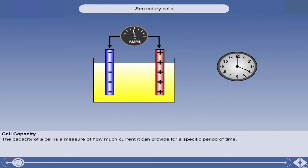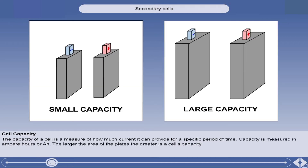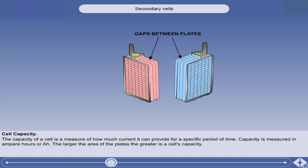The capacity of a cell is a measure of how much current it can provide for a specific period of time. Capacity is measured in ampere hours, or AH, and is determined by the surface area of the electrodes, or plates as they are often called. The larger the area of the plates, the greater is a cell's capacity. There may be a number of plates joined together in parallel in each cell to increase the capacity of the battery.